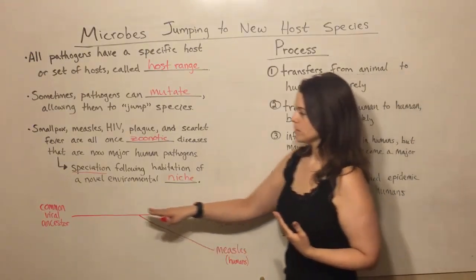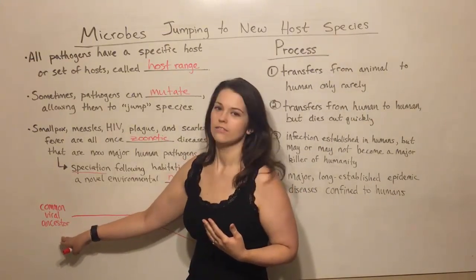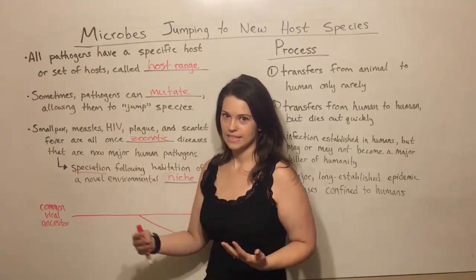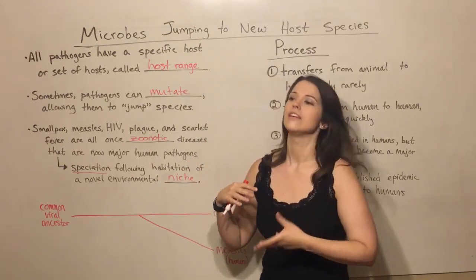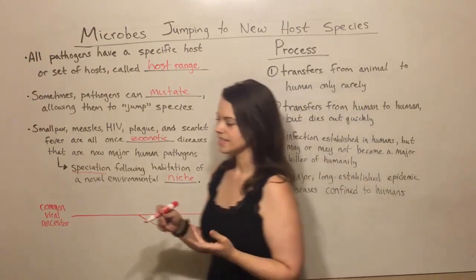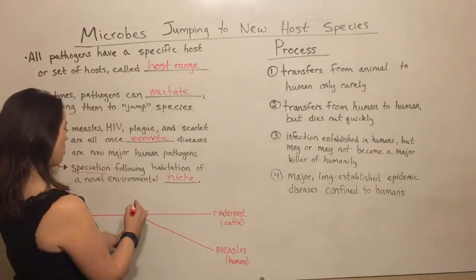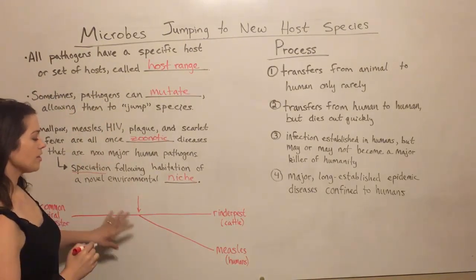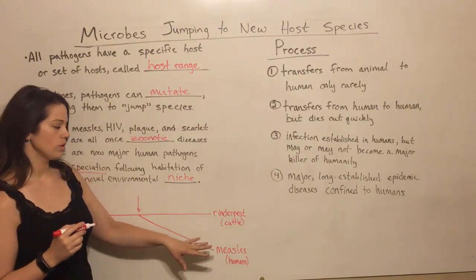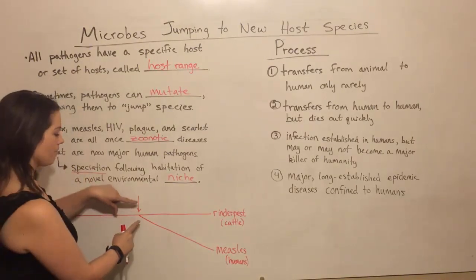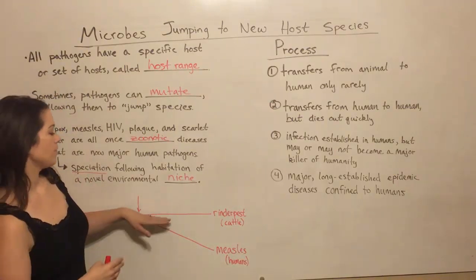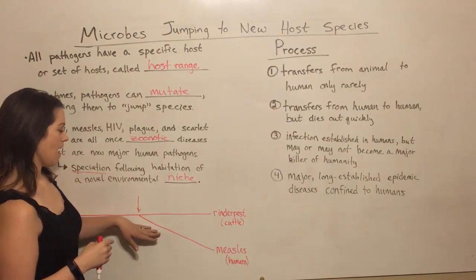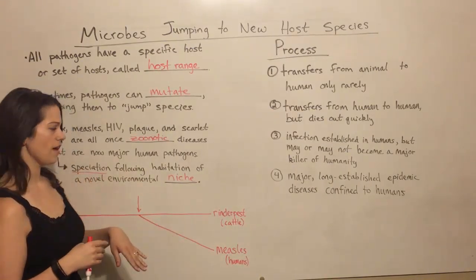Once upon a time, thousands of years ago, there was a common viral ancestor that was infecting cattle. Then cattle were domesticated and humans were living in close contact with cattle. At some point — right about here on this diagram — this pathogen actually jumped into humans for the first time. After that, there was a divergence: one strain could still infect cattle — that was the rinderpest virus — and then there was a strain that could infect humans, and that's the measles virus.